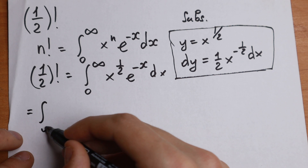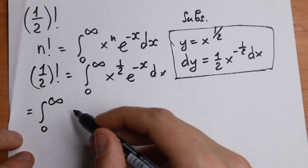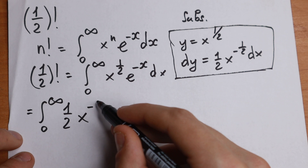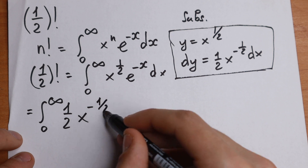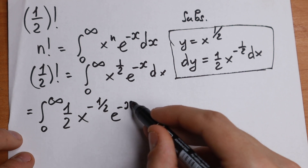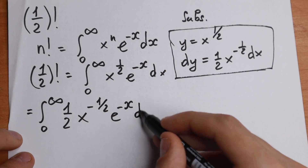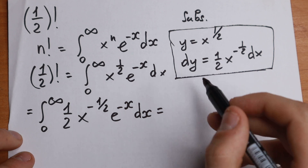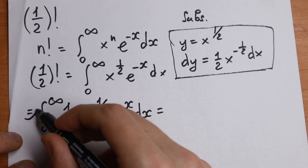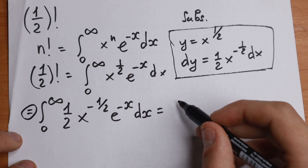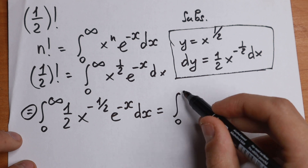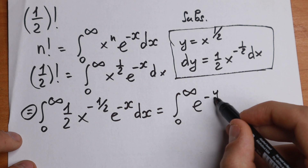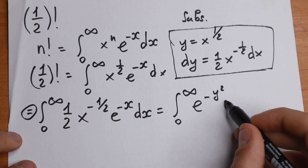Putting all the substitution elements in, the integral from 0 to infinity of one-half, x to the power minus one-half, e to the power minus x, dx becomes the integral from 0 to infinity of e to the power minus y squared, dy.